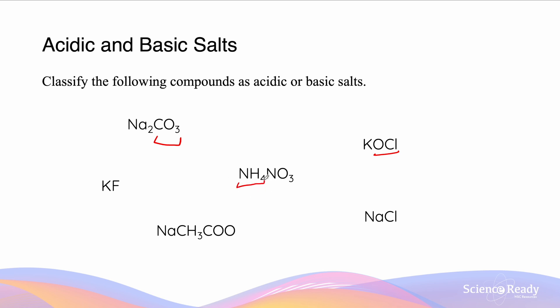NH4NO3, this is an acidic salt because NH4 is the conjugate acid of ammonia which is a weak base. KF is a basic salt because F is the conjugate of HF which is a weak acid.